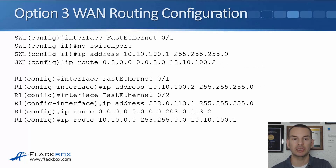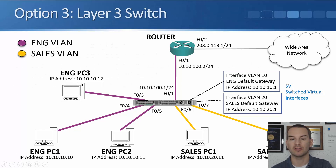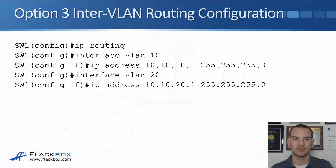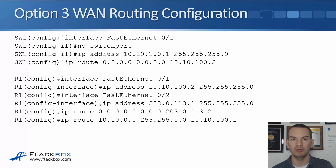We still need to do the WAN routing configuration. Looking at the topology, interface FastEthernet 0/1 on the switch connects up to the router, and we need to put an IP address directly on that physical interface, configuring it as a layer 3 interface. We say 'no switchport' for that interface, then assign IP address 10.10.100.1 with a slash 24 mask. Then we configure a default static route — IP route 0.0.0.0 0.0.0.0 with next hop 10.10.100.2 — to send all WAN-bound traffic up to the router.